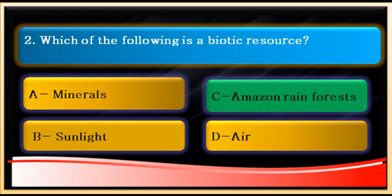Biotic resources are also called living resources or organic resources. Trees and forests are living, so the Amazon rainforest is a biotic resource. Options A, B, and D — minerals, sunlight, and air — are all abiotic resources. So for question number two, the answer is C: Amazon rainforest.